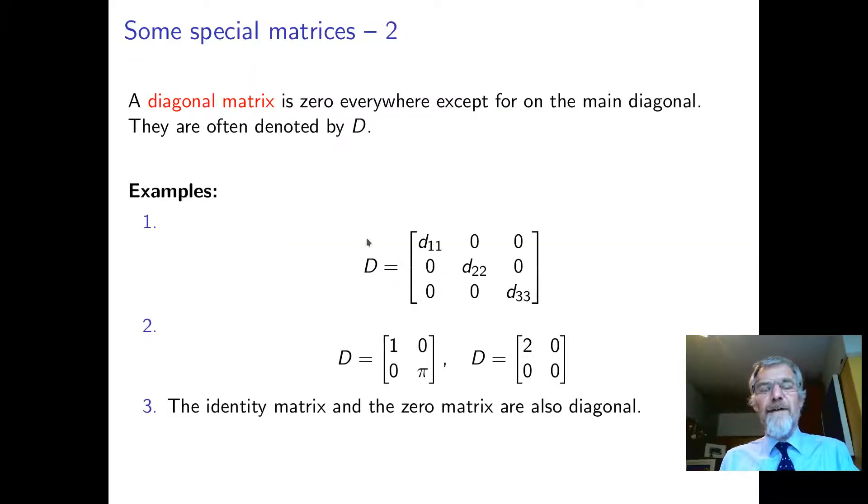A diagonal matrix is one with non-zero numbers only on the diagonal. For example, this matrix D has D_11, D_22, and D_33, and all the other elements are zero. It can also have zeros on the diagonal, but it must be zero off the diagonal. The identity matrix and the zero matrix count as diagonal matrices.